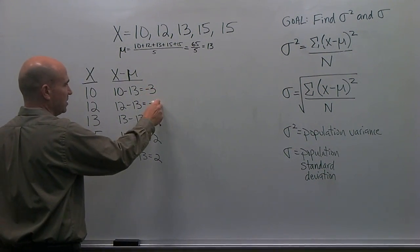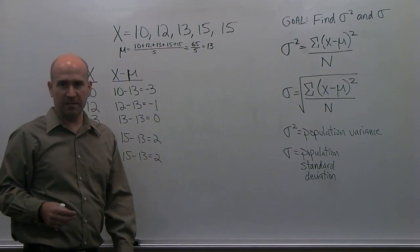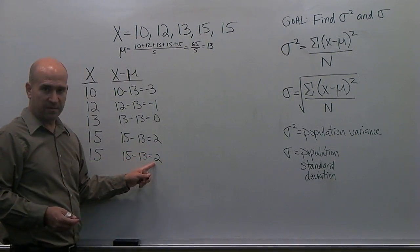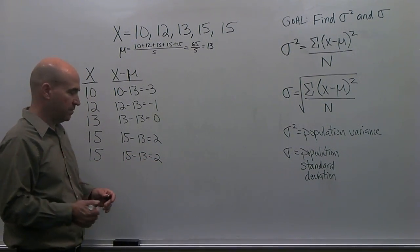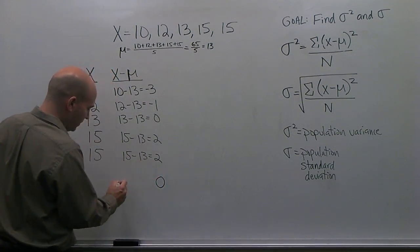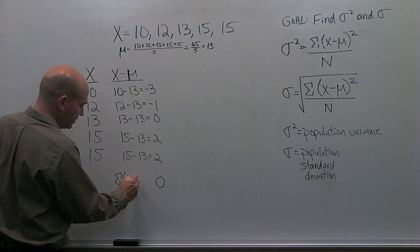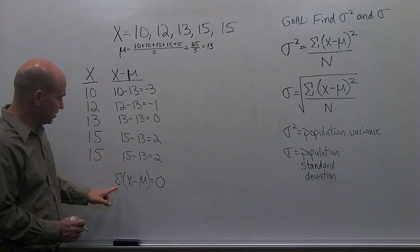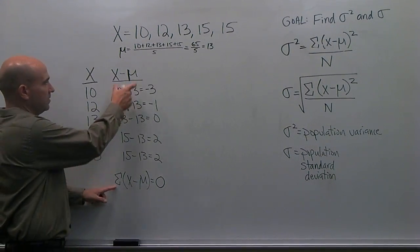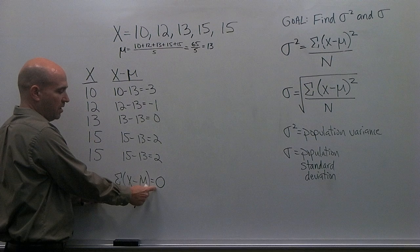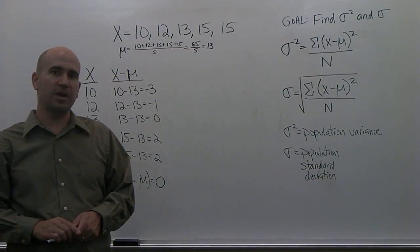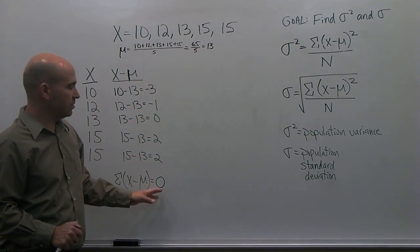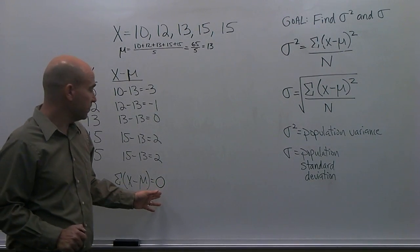So, when we add these up, negative 3 plus a negative 1 is a negative 4 plus 0 is still a negative 4. And then we have 2 plus 2 is a positive 4. So, when we have a negative 4 plus a positive 4, that is equal to 0. So, it's helpful as a check to make sure that these values equal 0. The sum of the deviation scores equals 0. So, that's a helpful check. You always want to make sure when you're doing this that these values, in fact, sum up to 0.